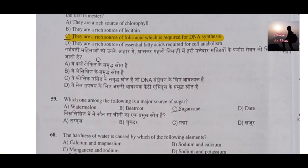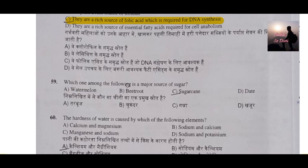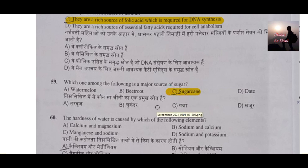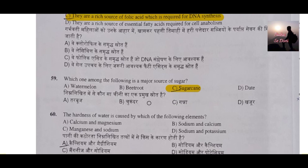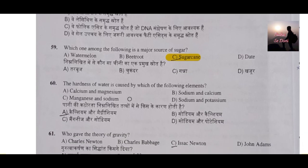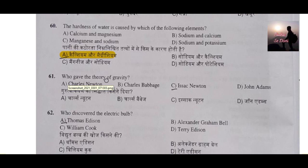Question number 59: Which one of the following is a major source of sugar? The answer is sugarcane — we produce the most sugar from sugarcane. Question number 60: The hardness of water is caused by which of the following elements? The correct answer is calcium and magnesium — these cause the hardness, also called the kathorata, of water.